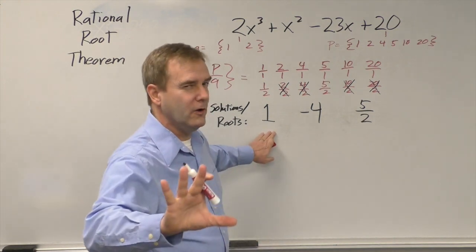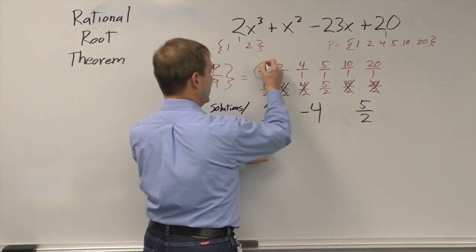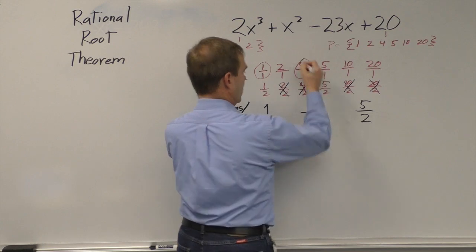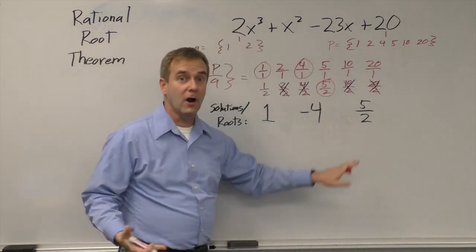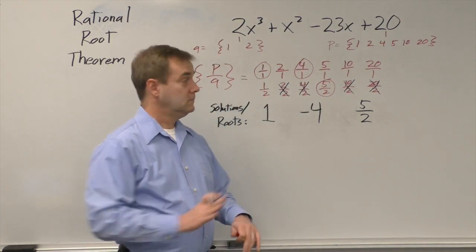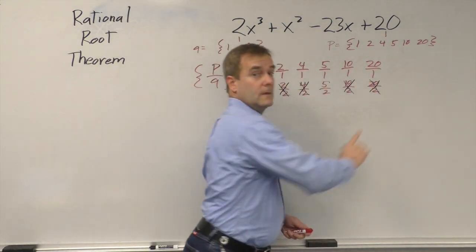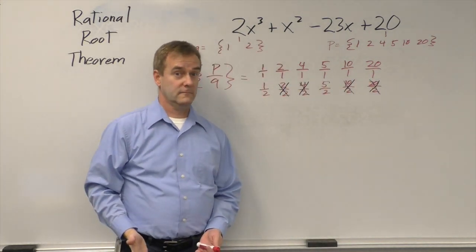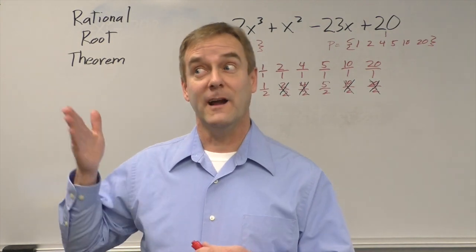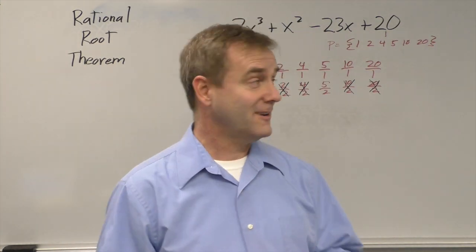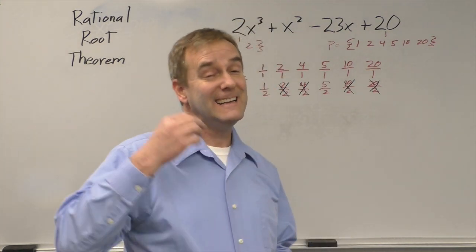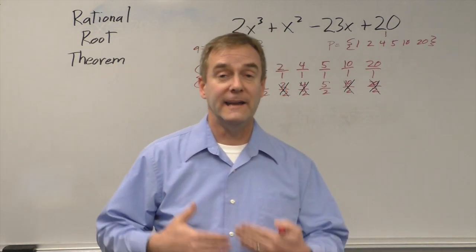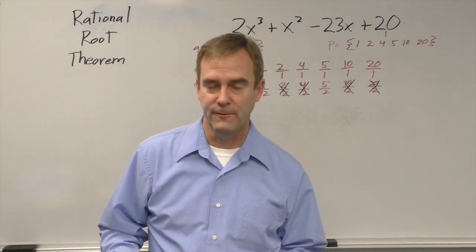Our answers, remember that we don't know yet, are 1, negative 4, and 5 over 2, or 2 and a half. There they are. We just didn't know which ones were the right ones. Now what you'll see in the factoring higher degree polynomials video is how to take this list of potentialities, test them one by one, and find a good one, and work from there to find the rest of them.